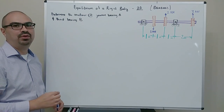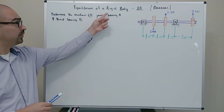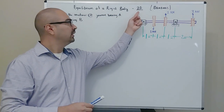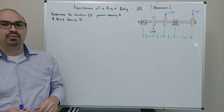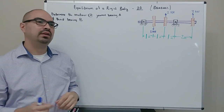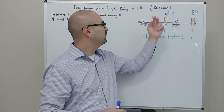In this example we're going to talk about the equilibrium of a rigid body in two dimensions. Specifically, we're going to be dealing with the case where we have bearing supports.